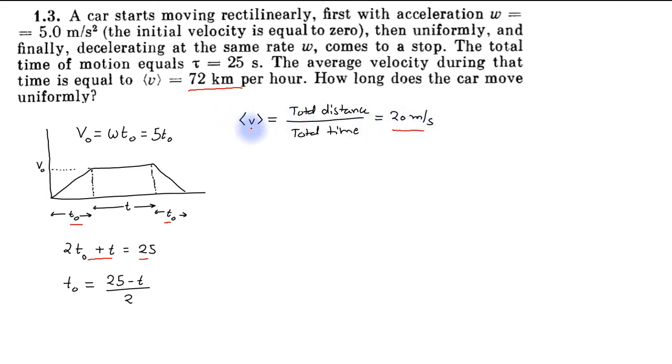Average velocity equals total distance upon total time. Since total time is given, we can find the total distance to be equal to 25 into 20, which is equal to 500 meters.